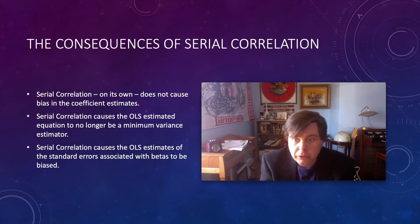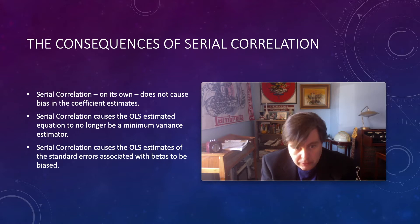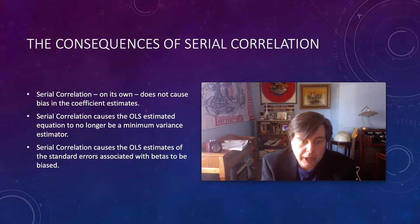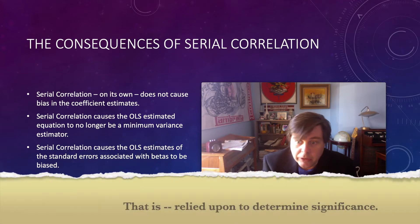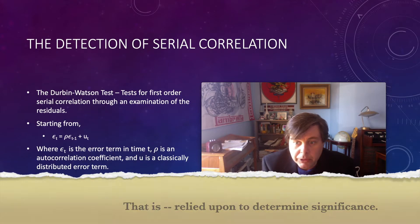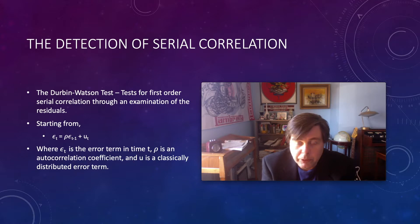What serial correlation does do is cause the OLS process to no longer be a minimum variance estimator. As a consequence, if we run OLS in a situation with uncorrected serial correlation, the standard errors associated with our estimated coefficients become biased — so the standard errors can no longer be relied upon, damaging our estimators' predictive capacity.